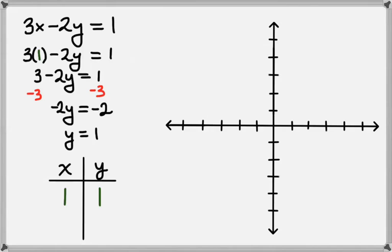So let's plot that point. We'll go to the right by 1 and up 1. That gives us the point 1, 1. Now we know that this point is on our line.